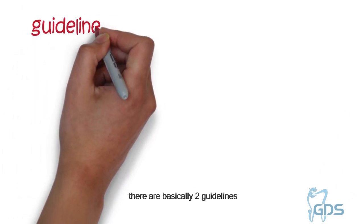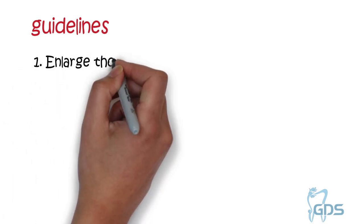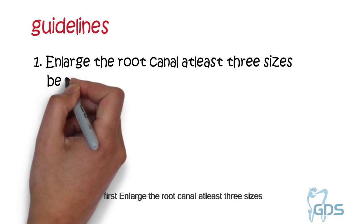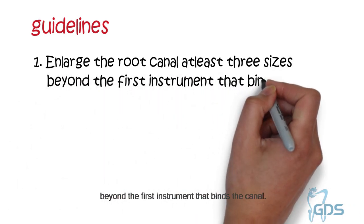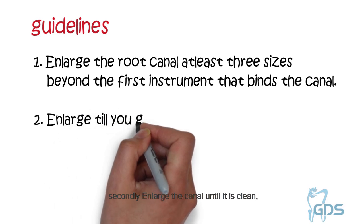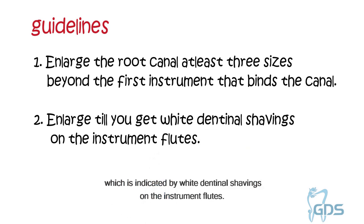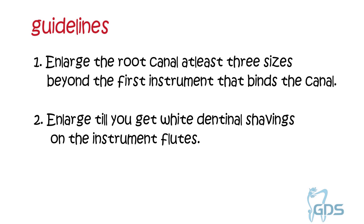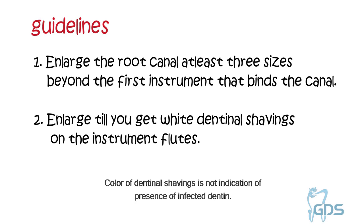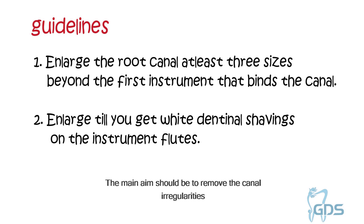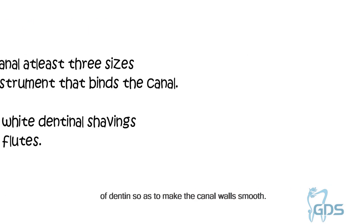There are basically two guidelines which we consider sufficient for instrumentation. First, enlarge the root canal at least three sizes beyond the first instrument that binds the canal. Second, enlarge the canal until it is clean, which is indicated by white dentinal shavings on the instrument flutes. However, these guidelines are not the sole criteria in all cases. The color of the dentinal shaving is not an indication of the presence of infected dentine. The root canal should be enlarged regardless of the initial working width, and the main aim should be to remove canal irregularities to make the canal wall smooth.